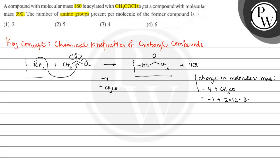So 2 multiplied by mass of carbon that is 12, plus mass of hydrogen multiplied by 3, that's 3 into 1, plus mass of oxygen that is 16. And this value is equal to 42 amu.